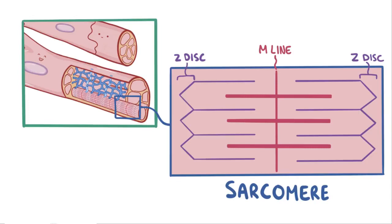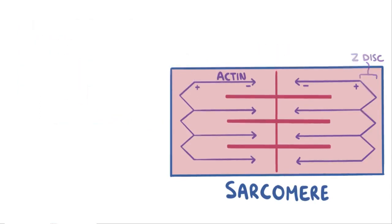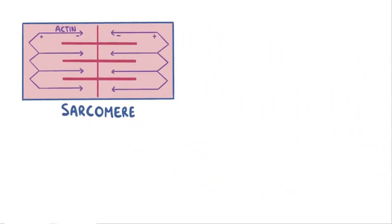Attached to the Z-disc are thin filaments made of actin protein. These actin filaments have structural polarity, which means both ends of the filament look different. We can think of it like an arrow, with the pointed end being the minus end pointing towards the M-line, and the tail end being the plus end, attached to the Z-disc. Just like an arrow, the actin filament can only move in one direction — the direction it's pointed at.